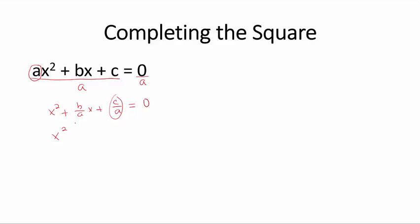This is x² + (b/a)x = -c/a. And we know that to complete the square, what we do is we divide the linear term by two and then square it.